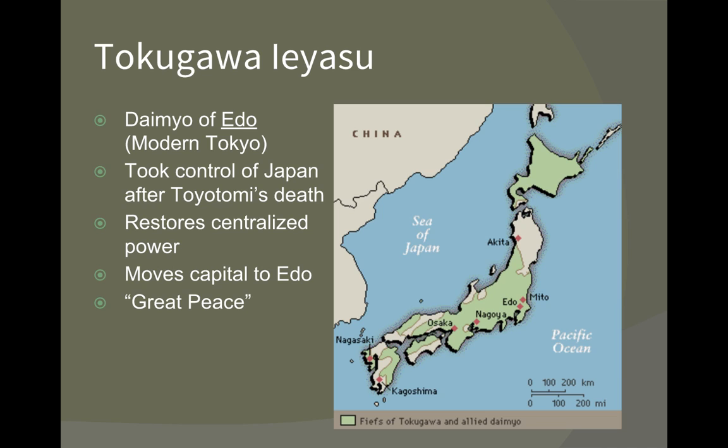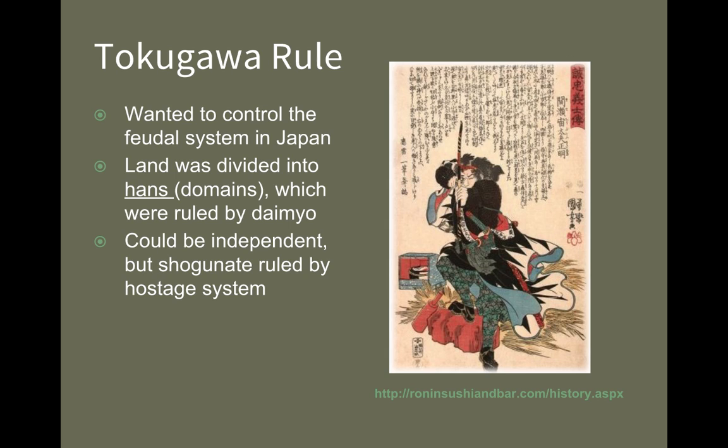When Ieyasu takes over, this marks a new period of Japanese history called the period of great peace, and this lasts until the 19th century — basically the entire Tokugawa shogunate is this period of great peace. So how is government situated in the Tokugawa shogunate? After consolidating all the land under the shogunate instead of all these different daimyos, they try to structure the land so that it could be ruled more efficiently.